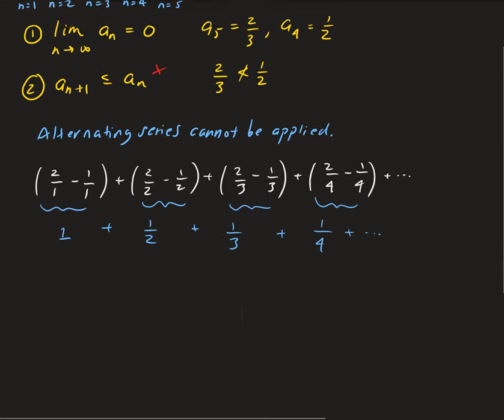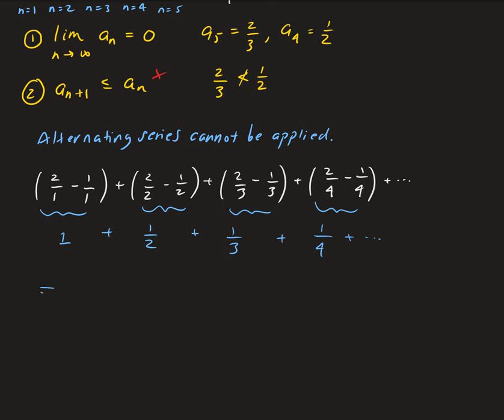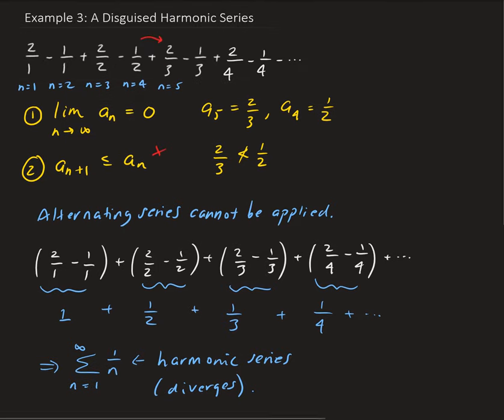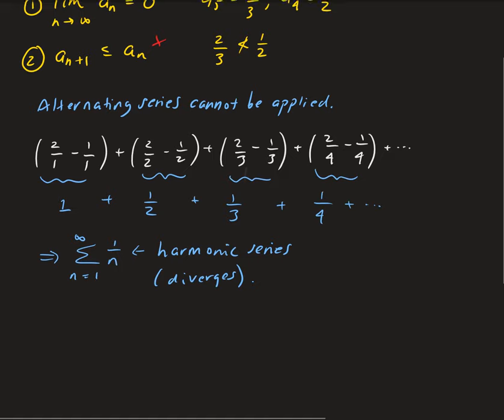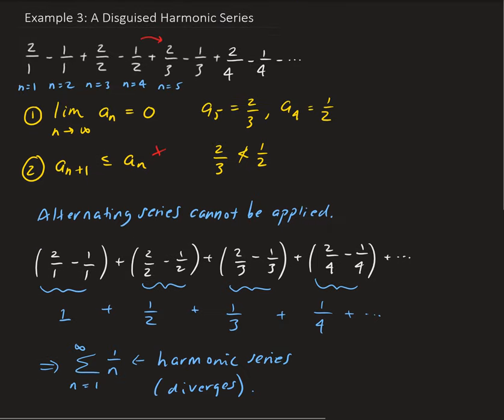What we end up getting is actually the harmonic series. And we know this series is divergent. So this one diverges. Therefore, the original series that we have is diverging. Therefore, it diverges.